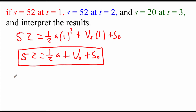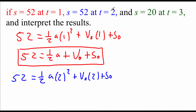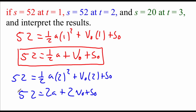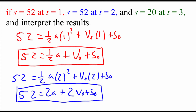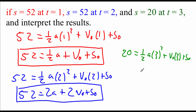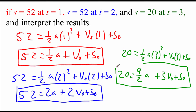Cleaning up the second equation: two squared is four, and four times one-half gives us 52 equals 2a plus 2 times v-sub-0 plus s-sub-0. This will be our second equation. Then using the last piece of information: 20 equals one-half times a times three squared plus v-sub-0 times three plus s-sub-0. Three squared is nine, and nine times one-half is nine-halves a. So we get 20 equals nine-halves a plus 3 v-sub-0 plus s-sub-0. This will be the third equation in our system.